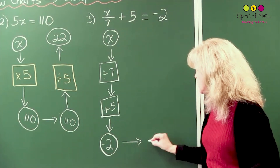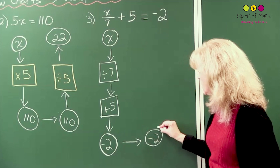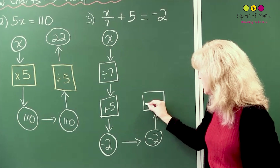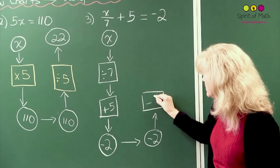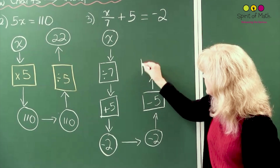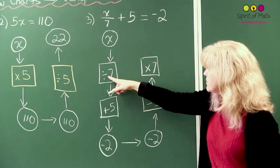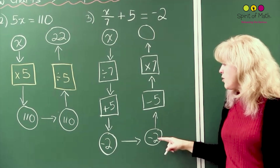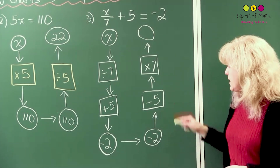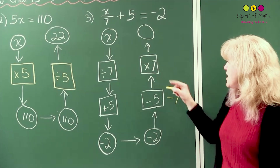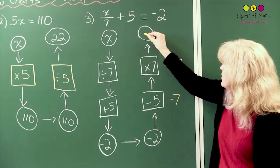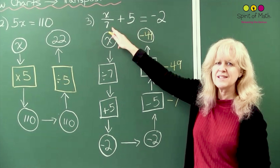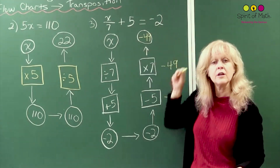Now you're going to go backwards, starting with negative 2. Because we're going backwards, the opposite of plus 5 is subtract 5. Then the opposite of divided by 7 is multiply by 7. And then you get your answer. Negative 2 minus 5 gives you negative 7. Negative 7 times 7 is negative 49, and that will be your answer. Double check: negative 49 divided by 7 is negative 7, plus 5 is negative 2. There, you've got your answer.